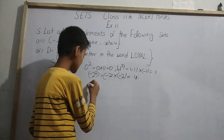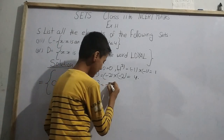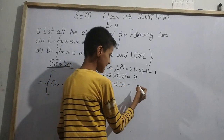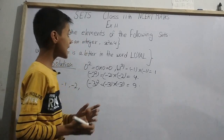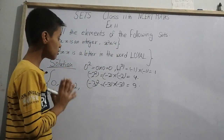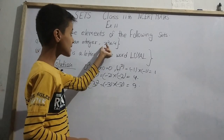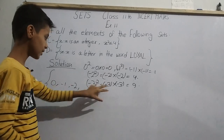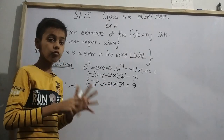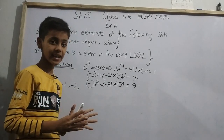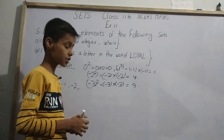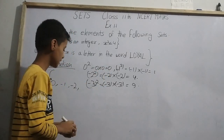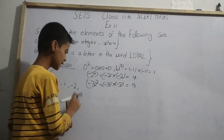Next, let us try -3: (-3)² = (-3) × (-3) = 9, which is greater than 4. So we cannot take -3, because x² should be less than or equal to 4, not greater than 4. If we go further in the negative direction, their squares will also be greater than 4. So we will stop in the negative direction here.